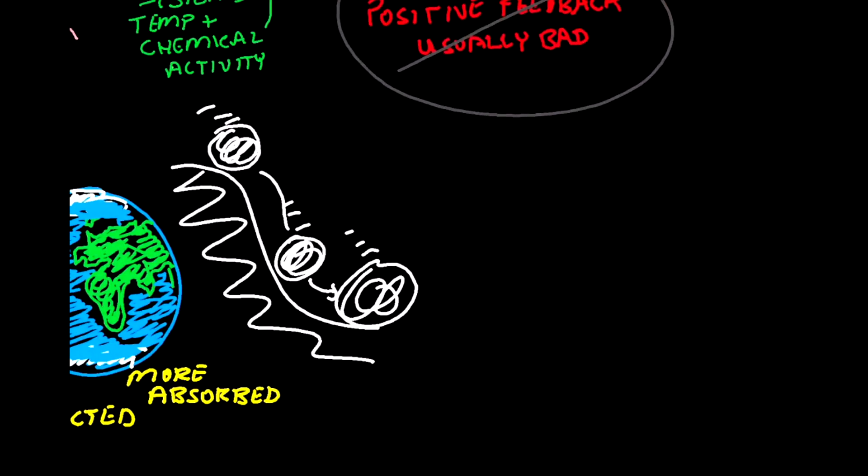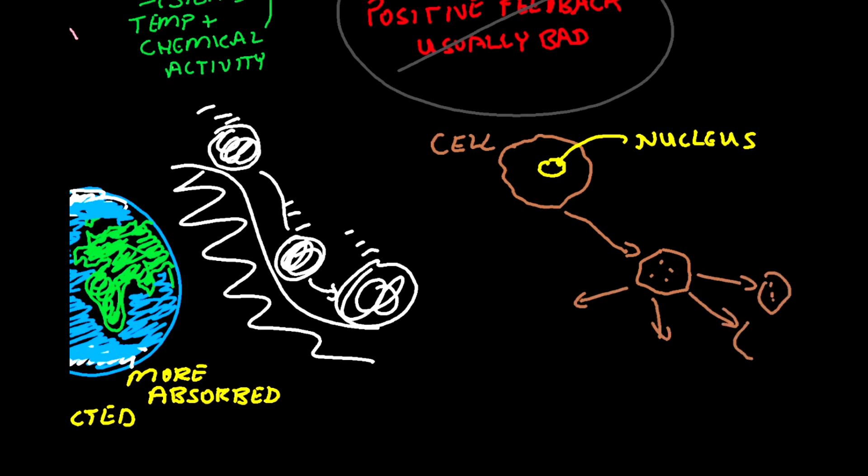Cancer cells are also an example of a positive feedback loop. Your cells in your body have a mechanism to shut themselves down if they detect a mutation or damage to the DNA. If that gene is damaged, you inherit a bad copy from your parents, or it gets damaged by a carcinogen, then that cell shouldn't replicate itself because it's damaged. Instead, it starts to replicate itself and continues to replicate itself, making more and more cells until it grows into a tumor.